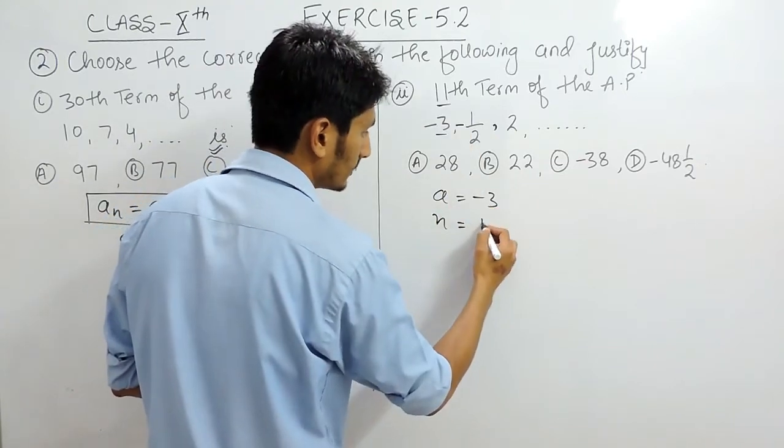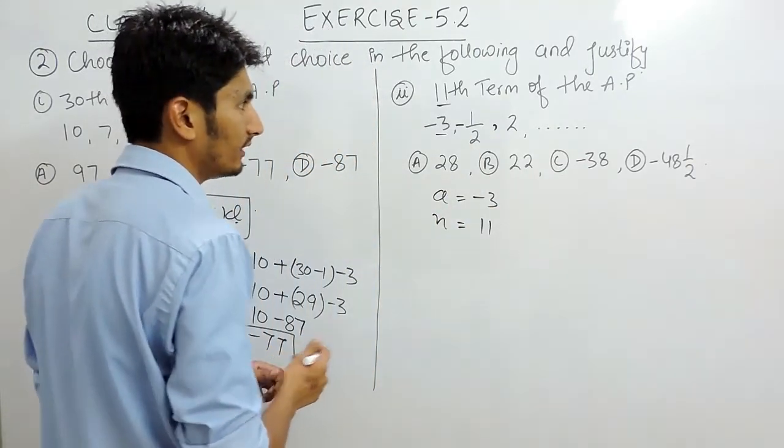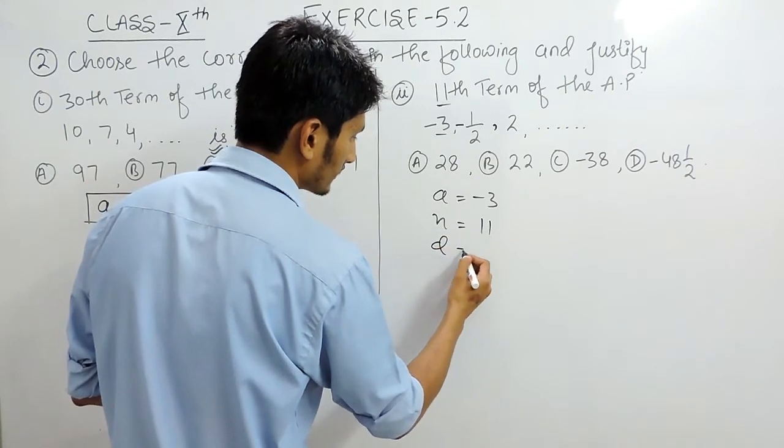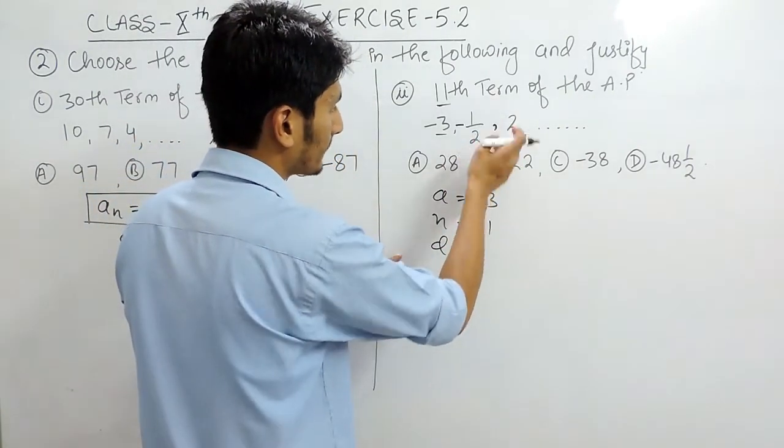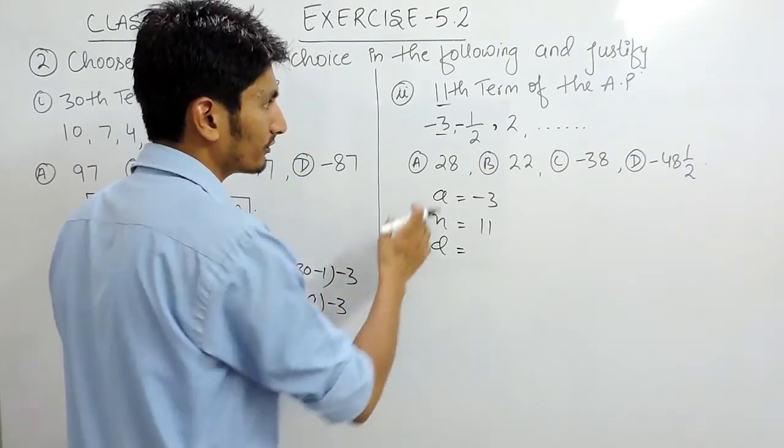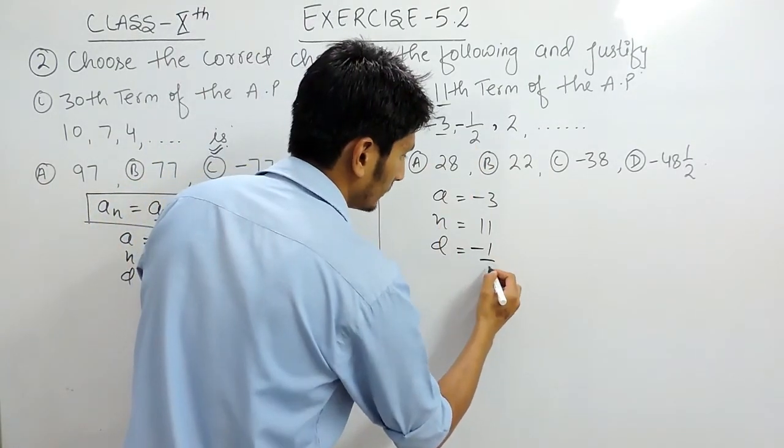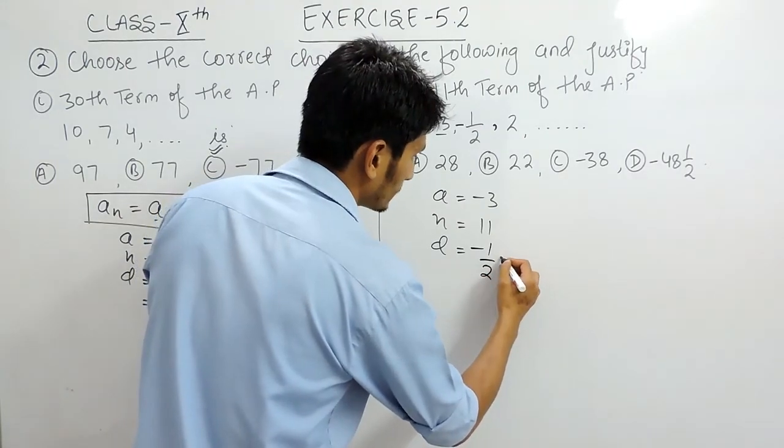The n, means the number of terms, which is 11, and the common difference. If you want to find the common difference, you can subtract any two terms of this AP, so let's subtract the first two terms.